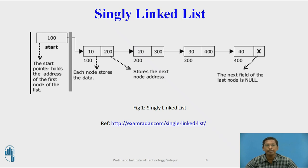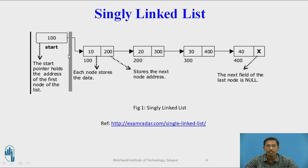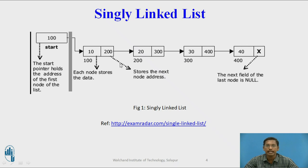These are diagrammatic representations of a singly linked list. The first node is the start — start is a pointer to a structure which holds the address of the first node. There are different nodes present in the singly linked list; in this diagram there are four nodes. 10, 20, 30, and 40 are the data parts present in each node.